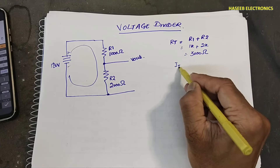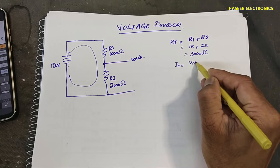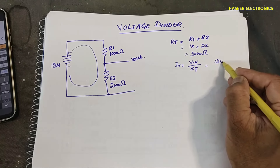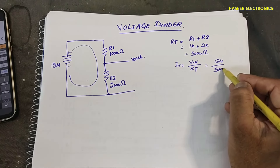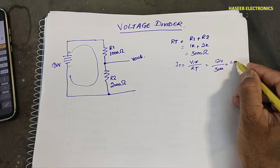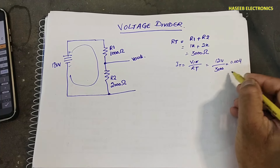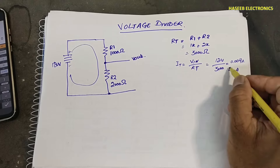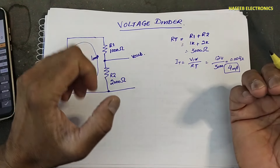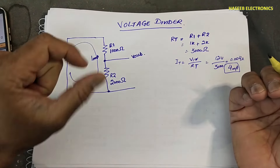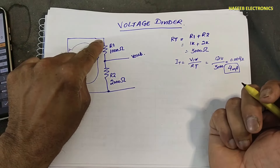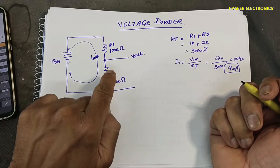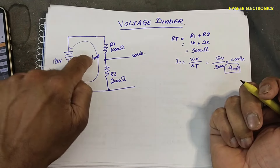Current in the circuit equals V_in divided by RT — 12 volts divided by 3000 ohms — giving 0.004 ampere, which is 4 milliampere. Now we need to calculate the voltage drop across any resistor, which depends on the resistor value and the current value.